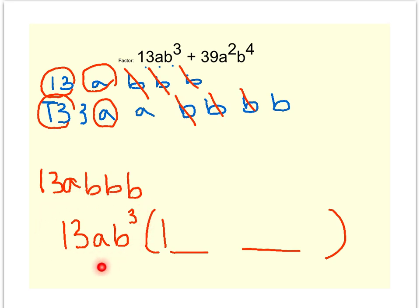Because notice, my GCF of 13AB to the third was the entire first term. I used the entire 13AB to the third. I used everything in that first list. But keep in mind, be very careful, you still need this placeholder of a 1 because you need two slots or two placeholders because you started with two terms. So let's finish up. 13 times what gets me back to 39? A plus 3. If I have an A, how many A's do I need here to get me back to A squared? You just need one. And then for the B's, I have B to the third. How many B's do I need here to get back to B to the fourth? Just one. So my final answer is 13AB to the third times the quantity of 1 plus 3AB.